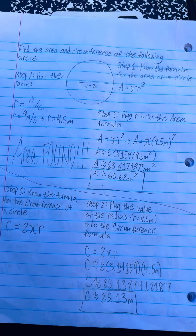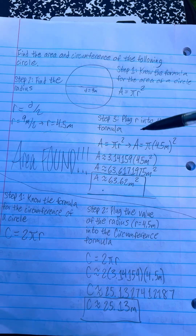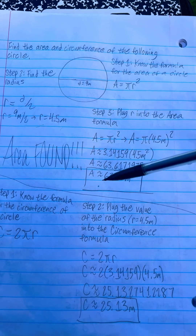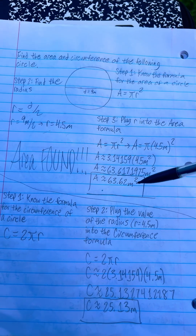Just plug that in and you'll get your area is approximately 63.62 meters squared. The reason why it says approximately is because pi is an irrational number — we don't know how many digits it has. Pi is not infinite, but it has infinite digits in its decimal places that just keep on going forever and ever.